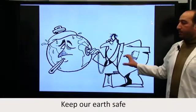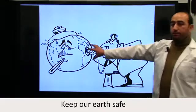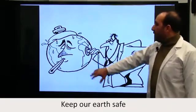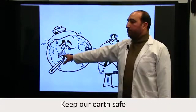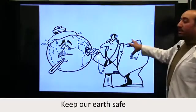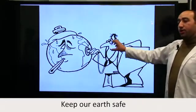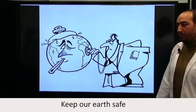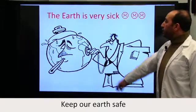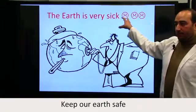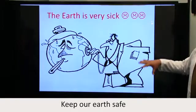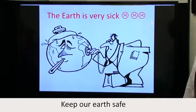As you can see in this picture, there is a globe — an earth — and it's putting a thermometer in its mouth, and there is a doctor diagnosing the earth. What does this mean? It means that the earth is very sick. So what causes the sickness of the earth?